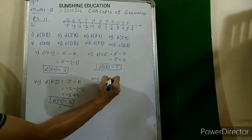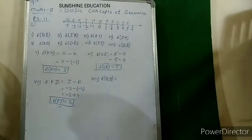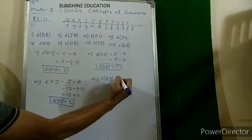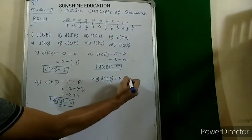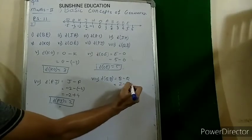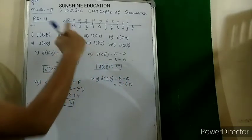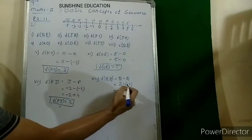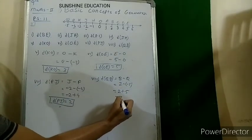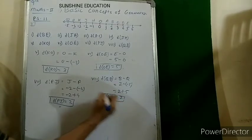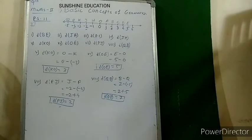Eighth: distance QB. B is greater, so B minus Q. Coordinate of B is 2 and coordinate of Q is minus 5. So 2 minus (minus 5) = 2 plus 5 = 7. Distance QB is 7 units.